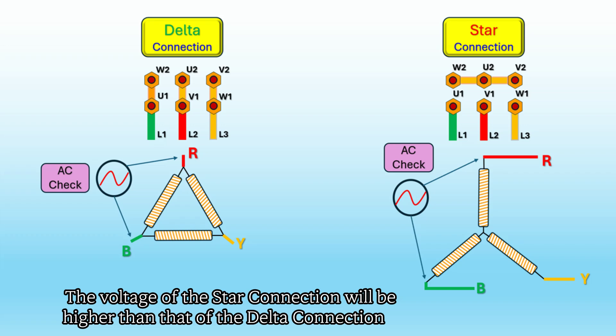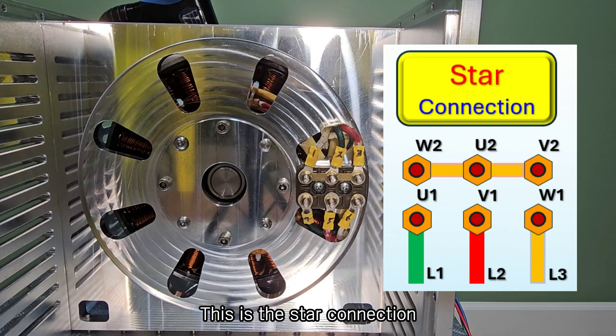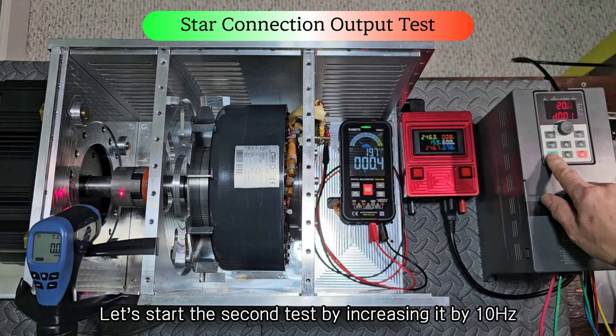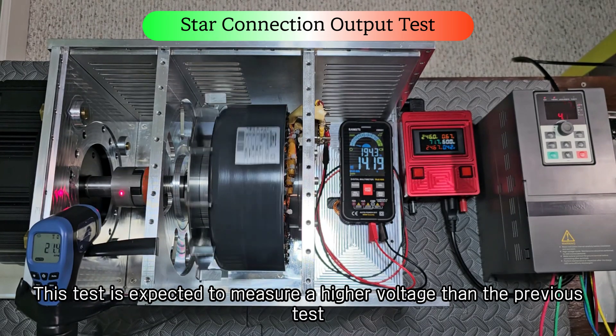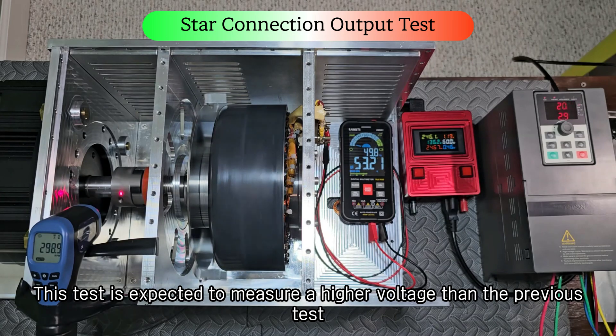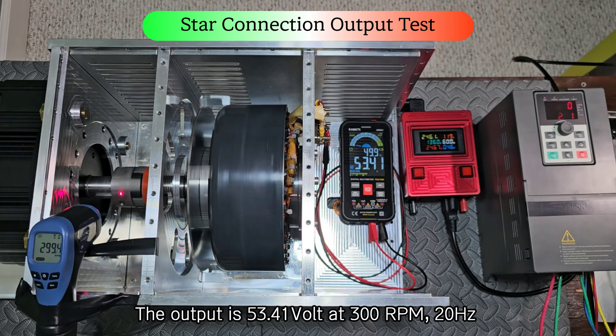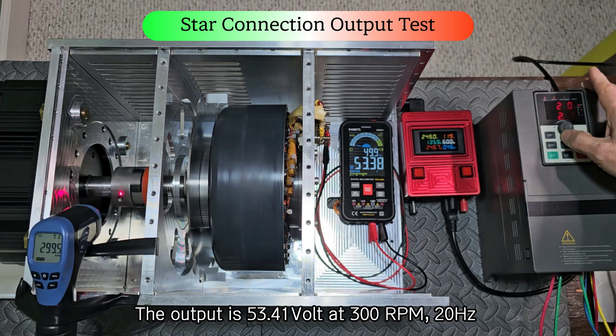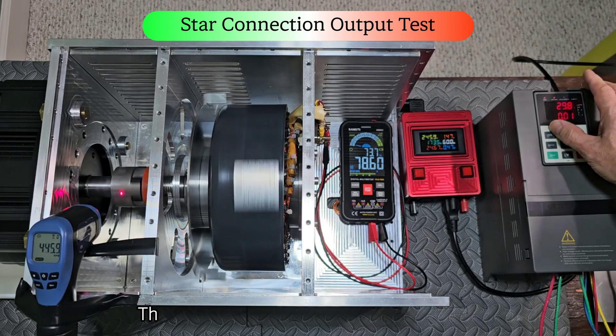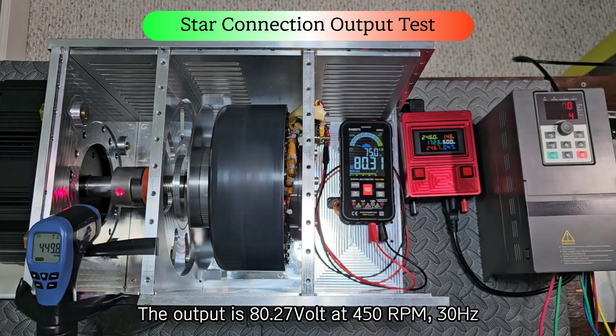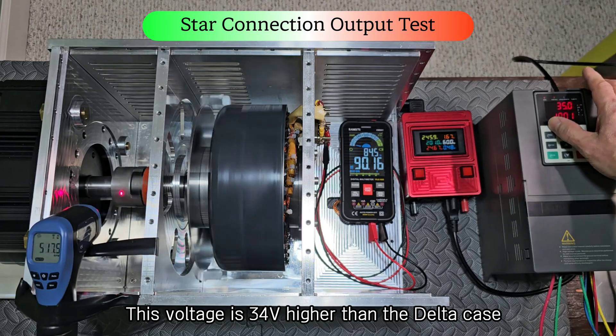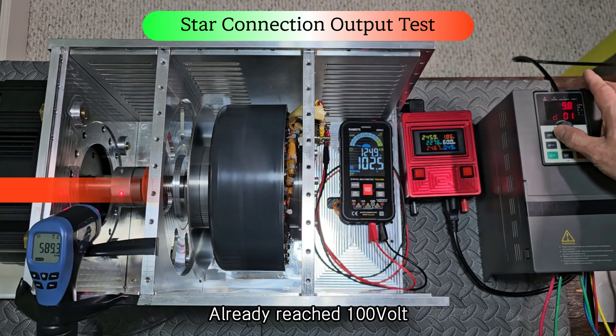The voltage of the star connection will be higher than that of the delta connection. This is the star connection. Let's start the second test by increasing it by 10 hertz. This test is expected to measure a higher voltage than the previous test. The output is 53.41 volt at 300 RPM, 20 hertz. The output is 80.27 volt at 450 RPM, 30 hertz. This voltage is 34 volt higher than the delta case.